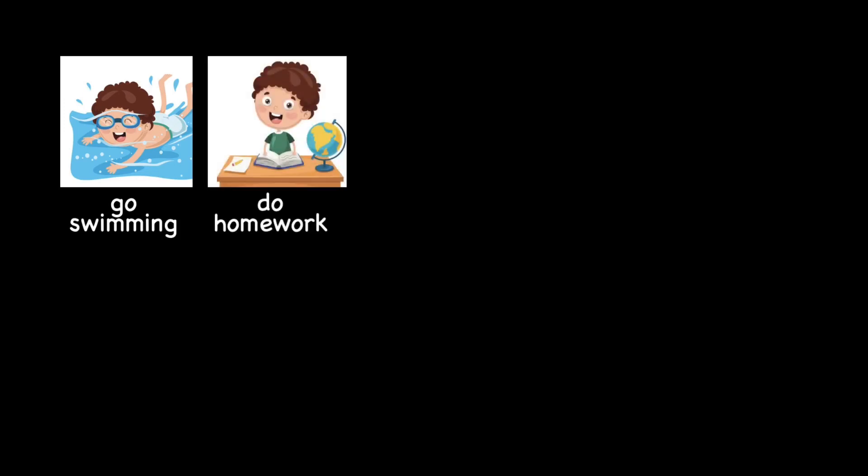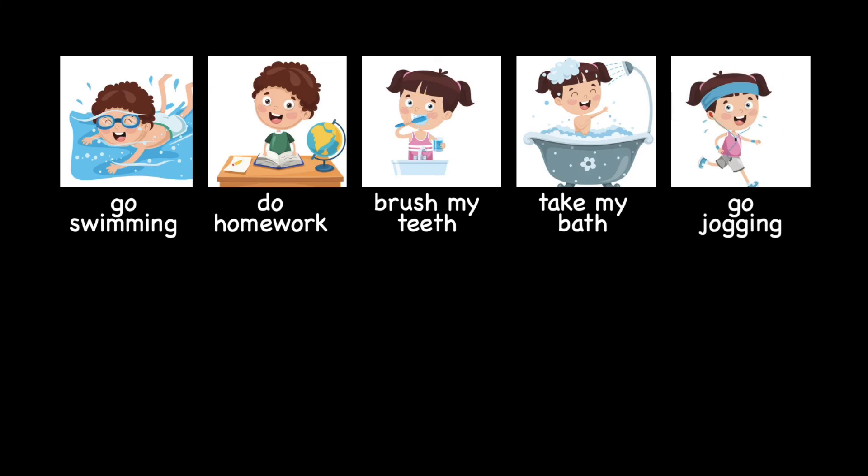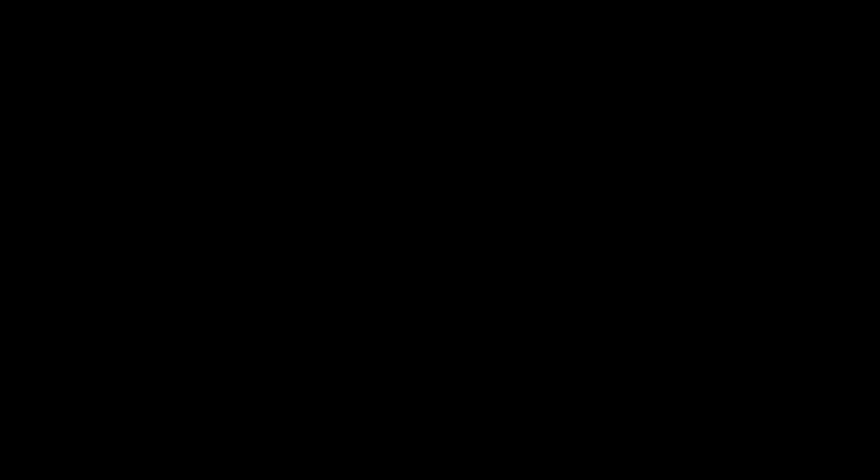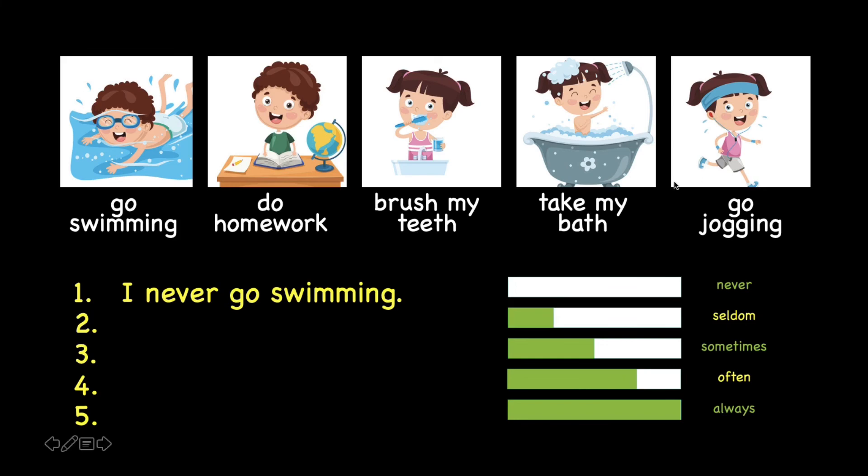Now, Mr. Pui wants to know how often you do all these activities. We have go swimming, do homework, brush my teeth, take my bath and also go jogging. So you are going to write a sentence using the adverbs of frequency. For example, Mr. Pui has not gone swimming before. So I would choose the word with an empty bar. So I would choose the word never. I write, I never go swimming. So you are going to do one, two, three, four, five sentences all together.